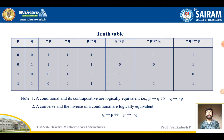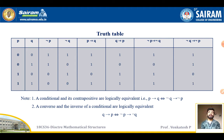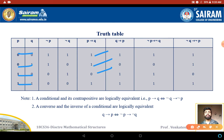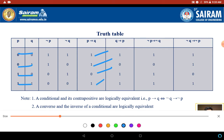Let me construct the truth table. P values are 0,0,1,1 and Q values are 0,1,0,1. Negation of P gives 1,1,0,0 and negation of Q gives 1,0,1,0. For P→Q: 0→0=1, 0→1=1, 1→0=0, 1→1=1. For converse Q→P: 0→0=1, 1→0=0, 0→1=1, 1→1=1.